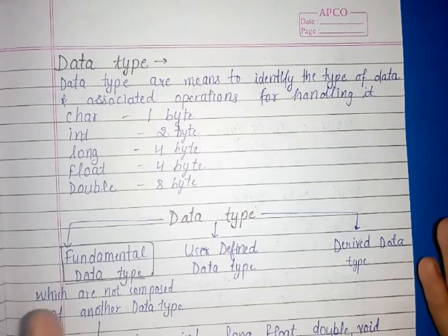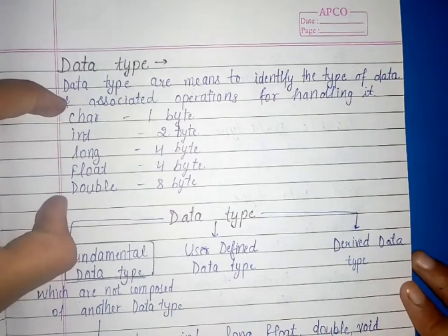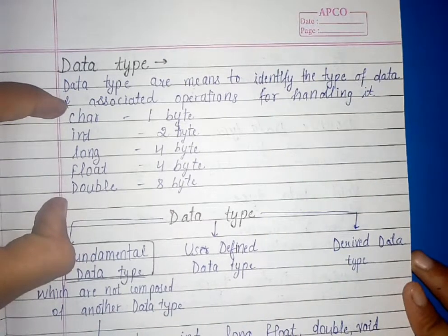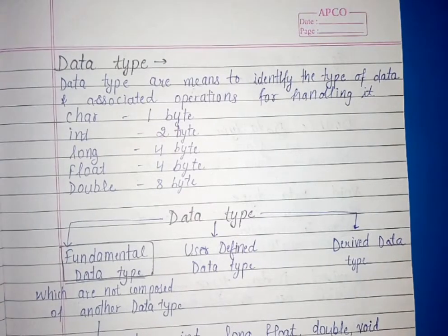So data types, we will explain which type of data is and which operations will be used. In this case, we have seen char, int, long, float, double, and their memories. We have seen all these data types. These are data types.